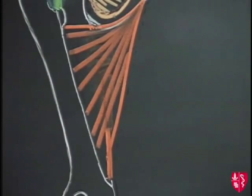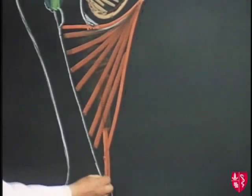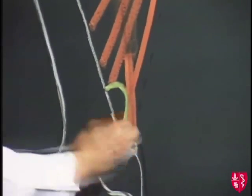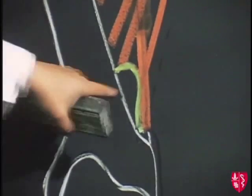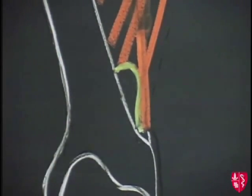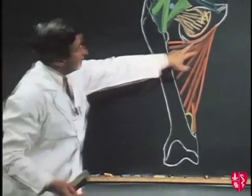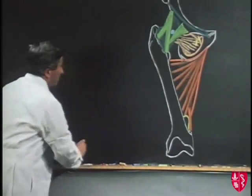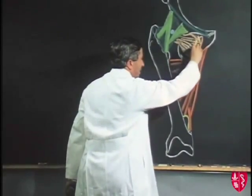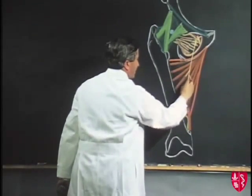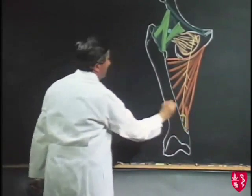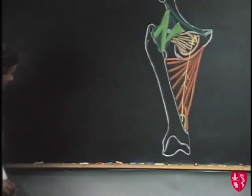We must leave in the lower part an opening — the hiatus in the adductor magnus — through which the femoral vessels pass from the front of the thigh to enter the popliteal space behind the knee joint. It is the adductor part of the adductor magnus that is supplied by the posterior division of the obturator nerve, which comes down, supplies the adductor part, and finally passes through this hiatus to supply the knee joint from the posterior aspect.